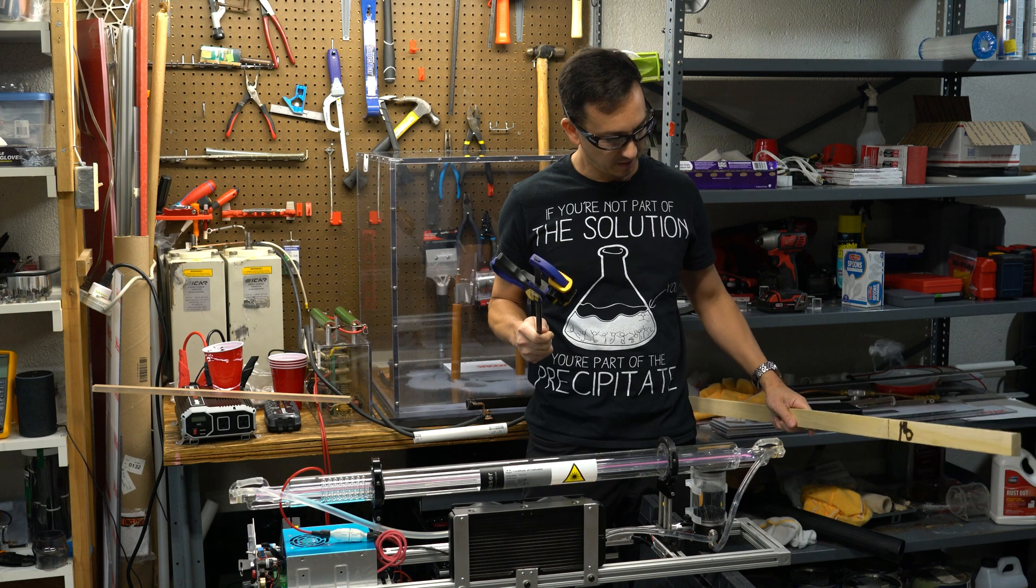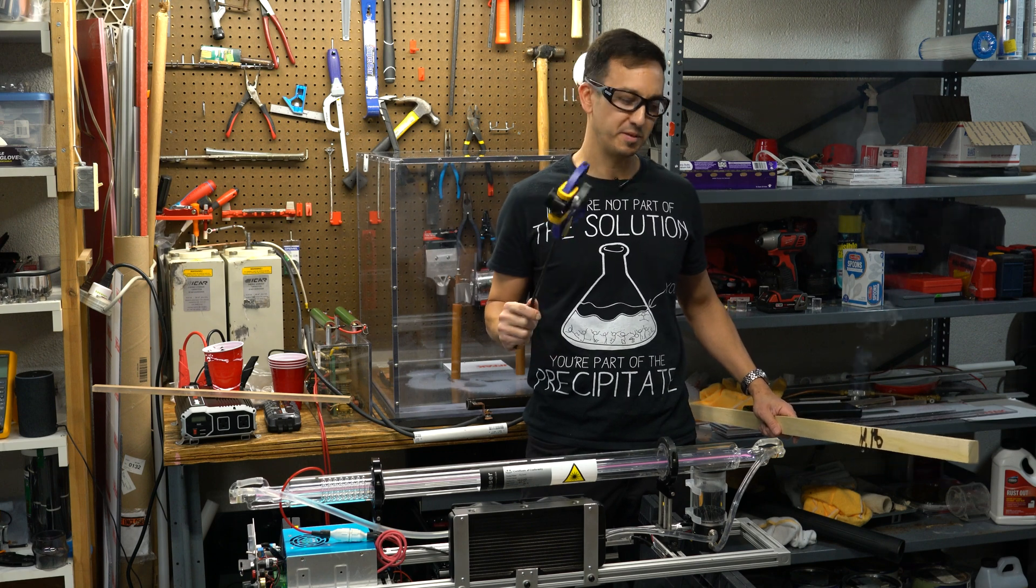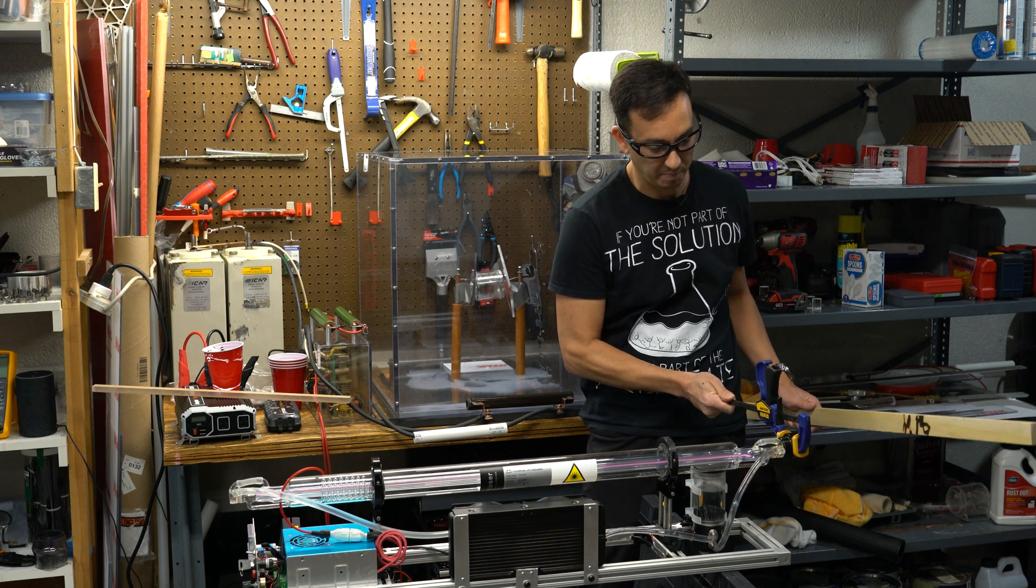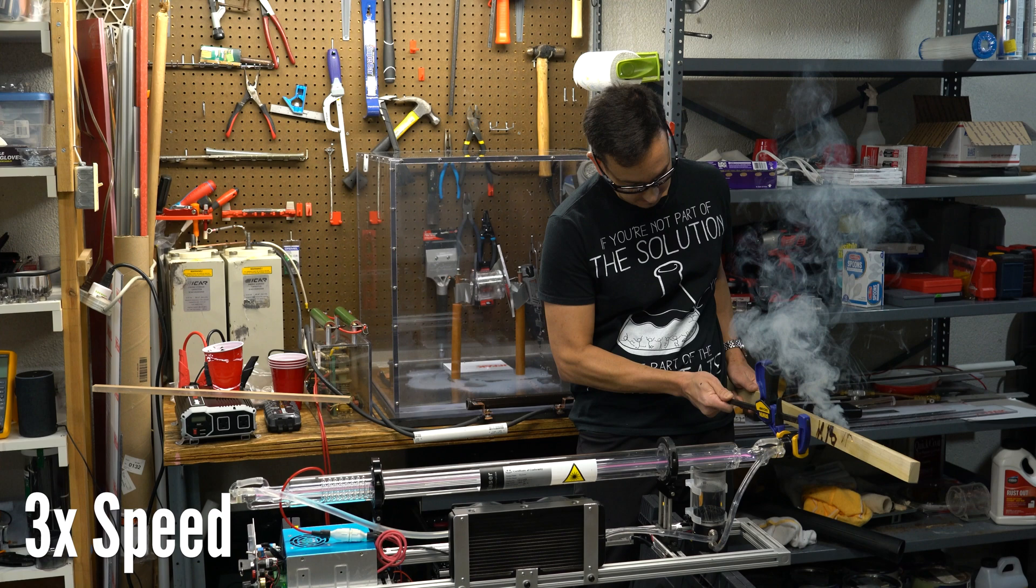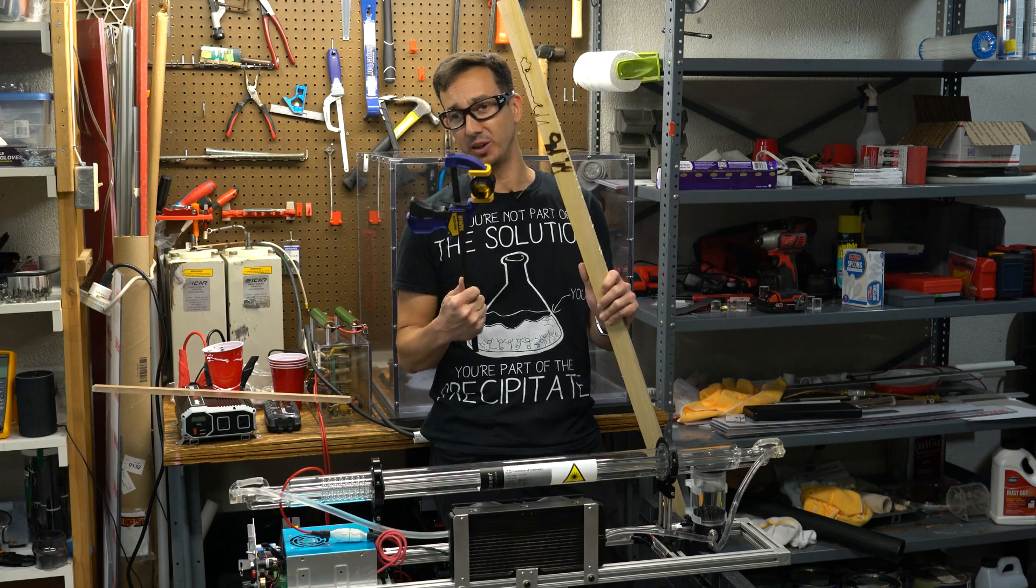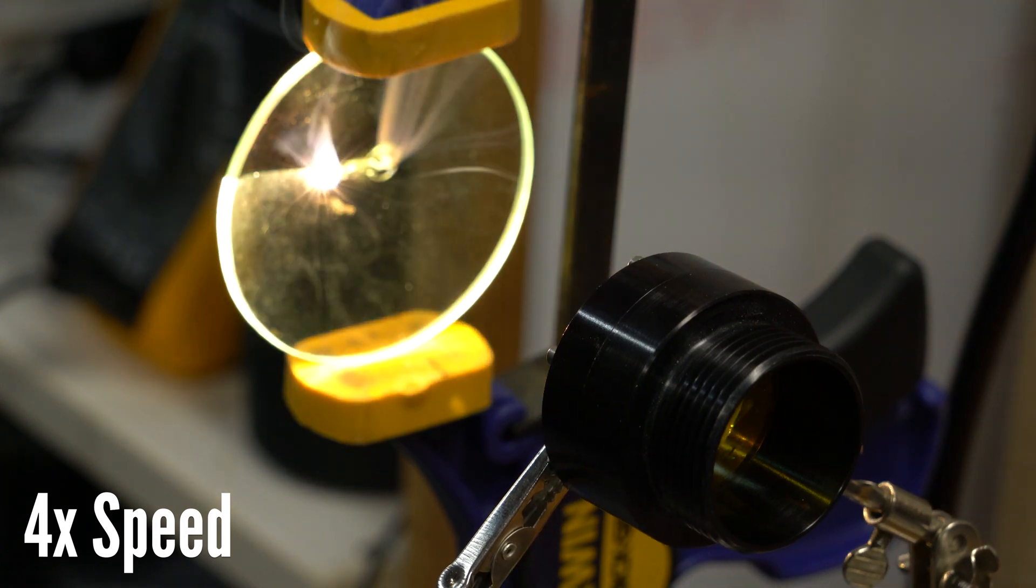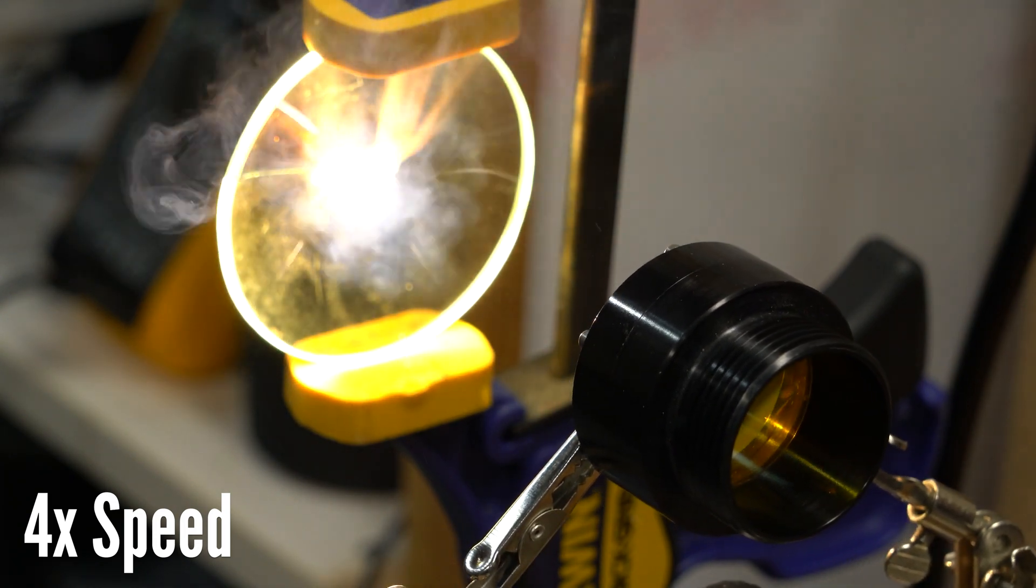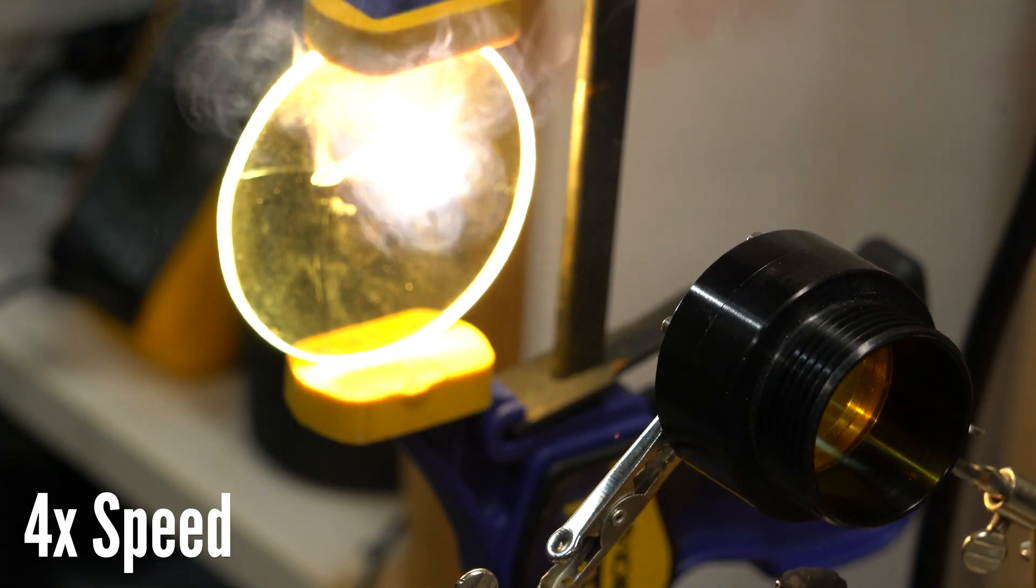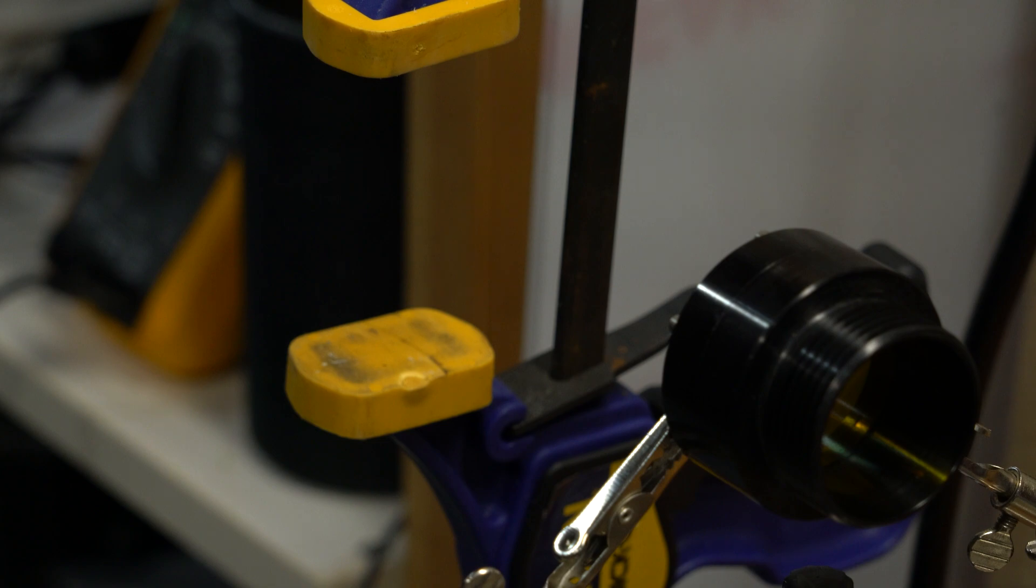Without the lens, the power density is enough to burn wood, but really not in any sort of impressive way. But with the lens in place, now we have much more power density. And you can see the difference in the size of the burn. Of course the burn with the lens is a lot smaller.